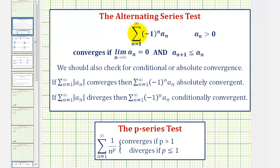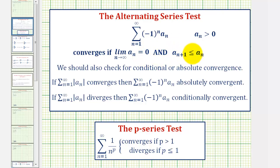If we have an alternating series in this form where a sub n is greater than zero, the series converges if the limit as n approaches infinity of a sub n equals zero, and a sub n plus one is less than or equal to a sub n.